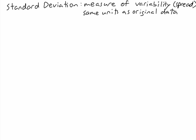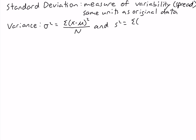Now remember the formulas for the variance: sigma squared equals the sum of x minus mu squared over n for the population variance, and s squared is equal to the sum of x minus x-bar squared over n minus 1 for the sample variance. Now x minus the mean is called the deviations about the mean, and when calculating the variance we square these deviations about the mean. So what we get for the variance is a quantity that's not in the units of the data but is in the units of the data squared.